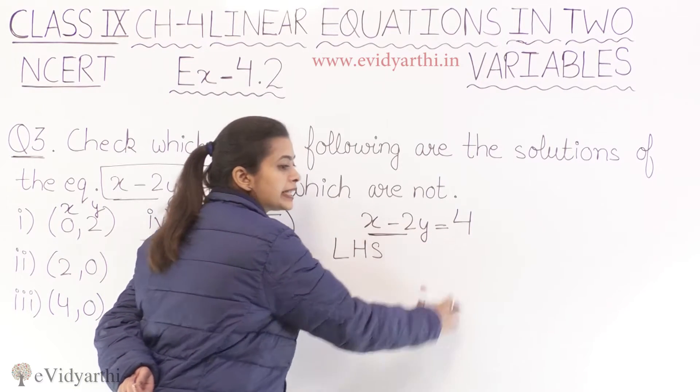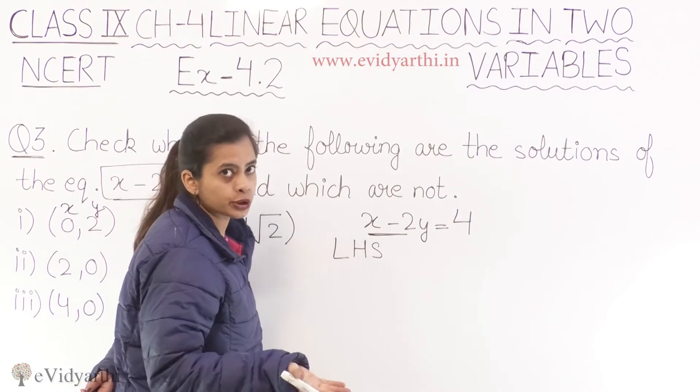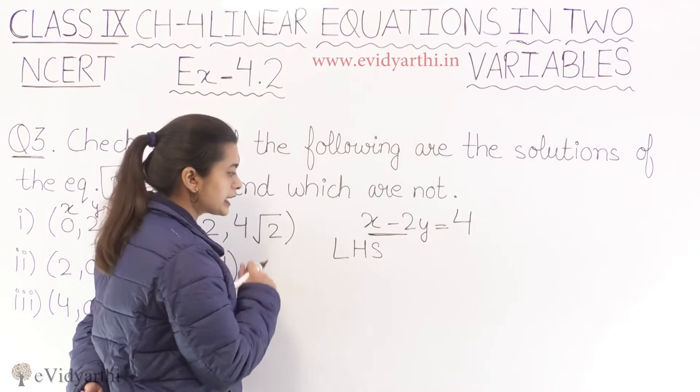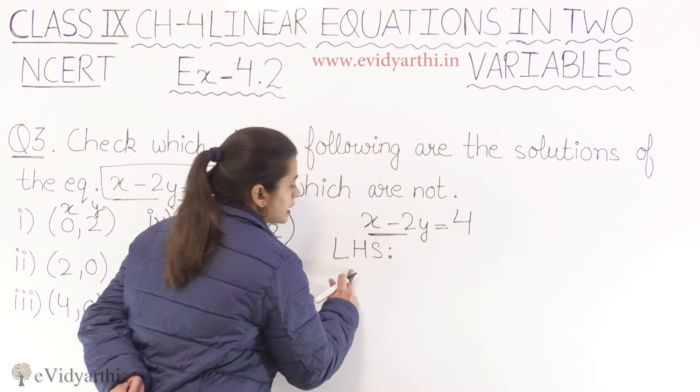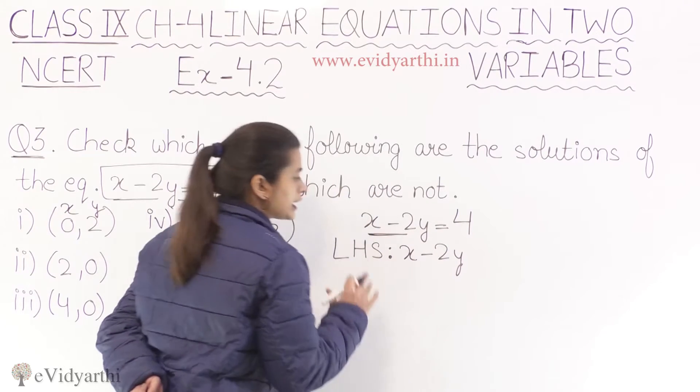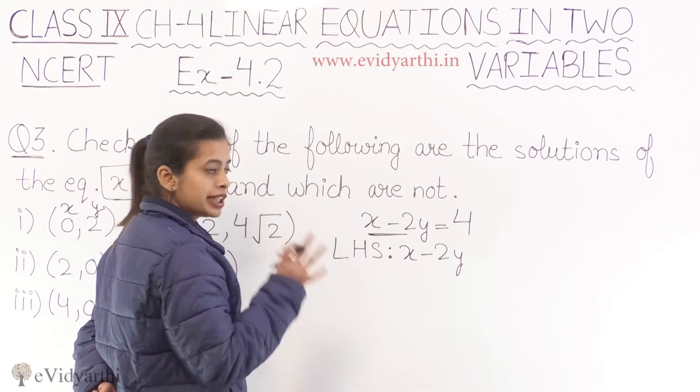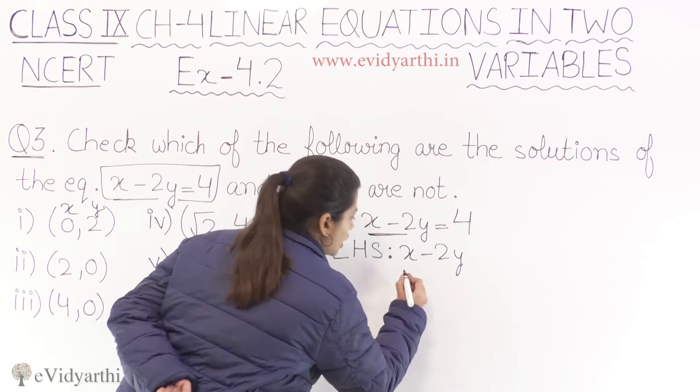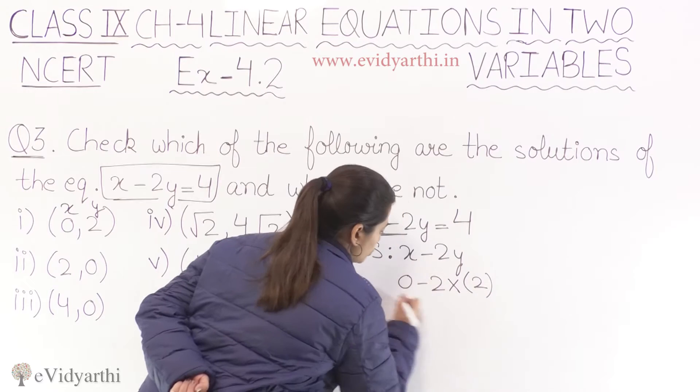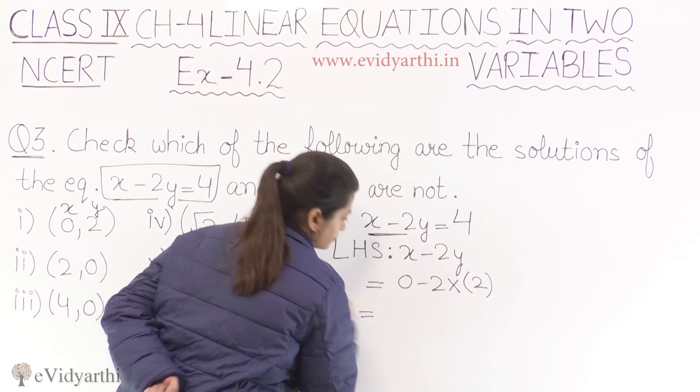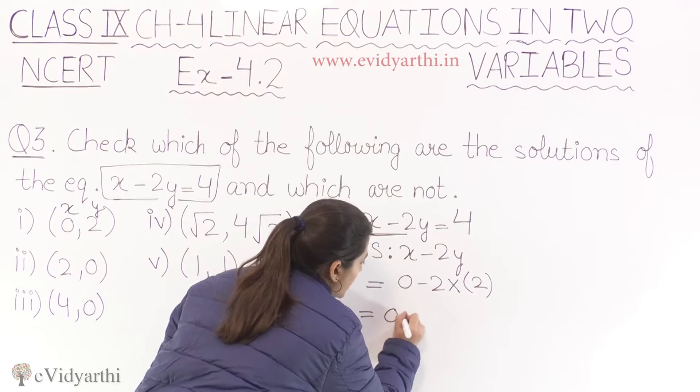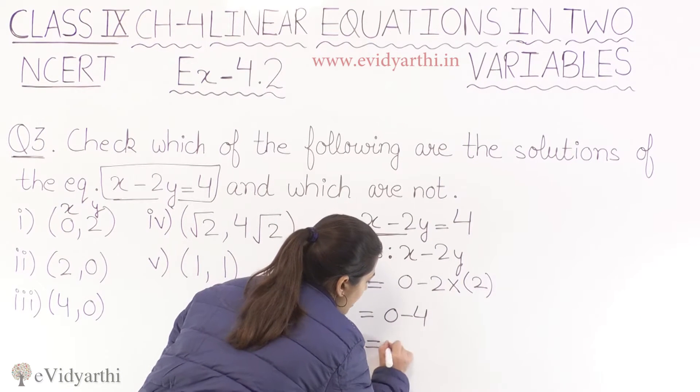Since is expression ko me nikaalungi. Agar ye expression right hand side ke term se equal ho jata hai, then I will say this is a solution. So left hand side pe kya hai mere paas? x minus 2y. x kitna hai? x we have as zero, y we have as two. So humne yahaan par zero rakha, and then y kitna hai? Two. Kya humare paas aa raha hai? Zero minus 2 into 2, four aagya. Zero minus 4, kya aagya? Minus 4.